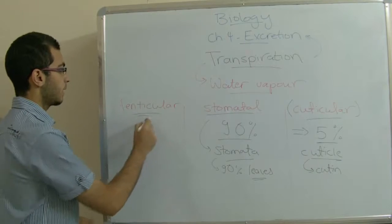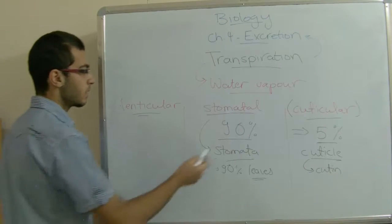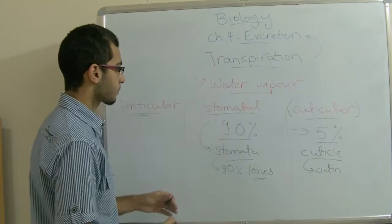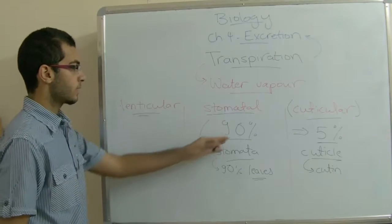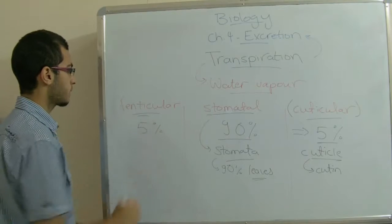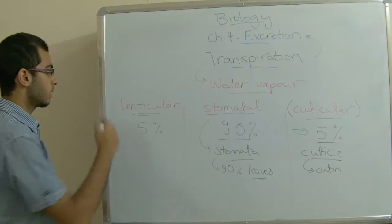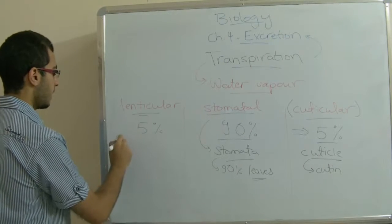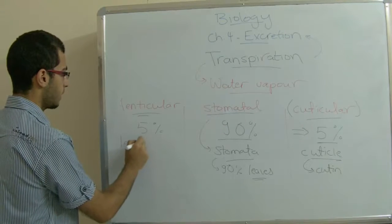The third type is lenticular transpiration and we can conclude that its ratio is about 5% of the total amount of transpiration, and it's called lenticular because it takes place through the lenticels.